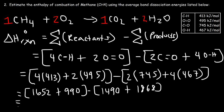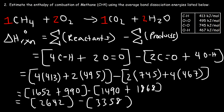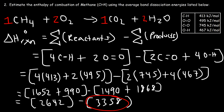Adding 1652 and 990 gives 2642 kJ/mol — that's how much energy we put in to break all the bonds of the reactants. Then 1490 plus 1868 is 3358 kJ/mol, which is the energy released as the bonds of the products form. The net result is negative 716 kilojoules per mole, which is the estimated enthalpy of combustion of methane.